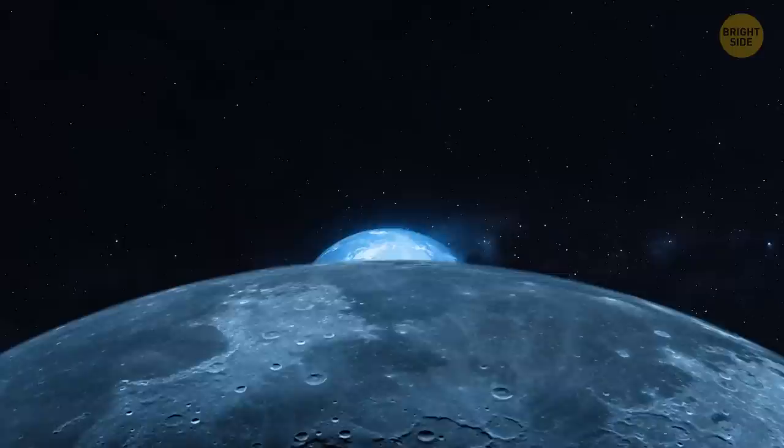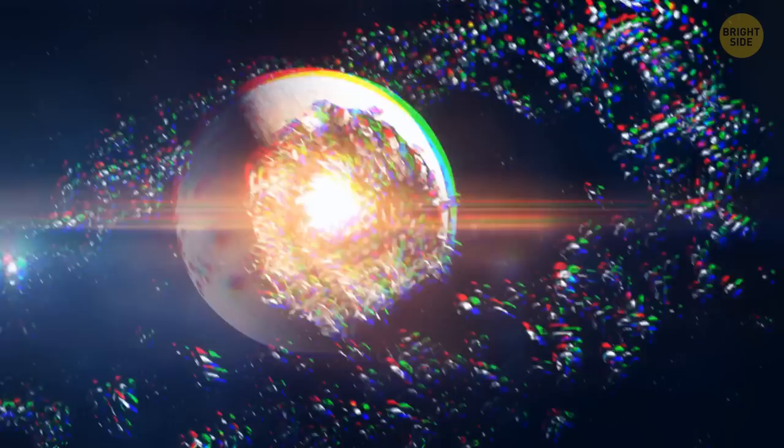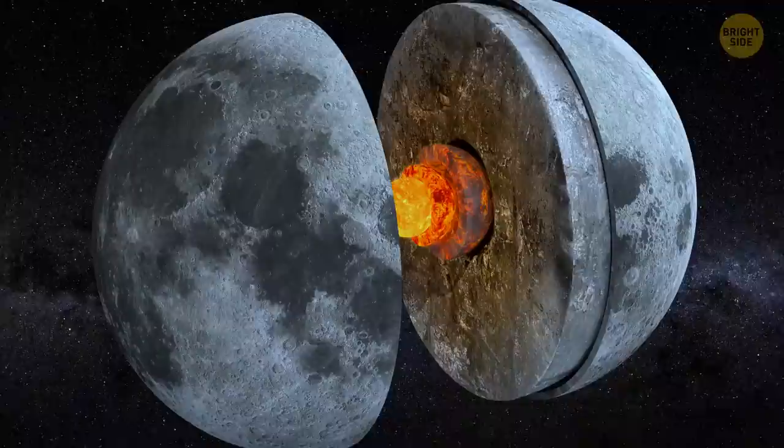These days, the moon is the fifth-largest natural satellite in our solar system. It's also one of the densest, second only to Jupiter's satellite IO. Most likely, the moon has a tiny core, no bigger than 2% of the satellite's mass. About 420 miles wide, it consists mostly of iron and sulfur.